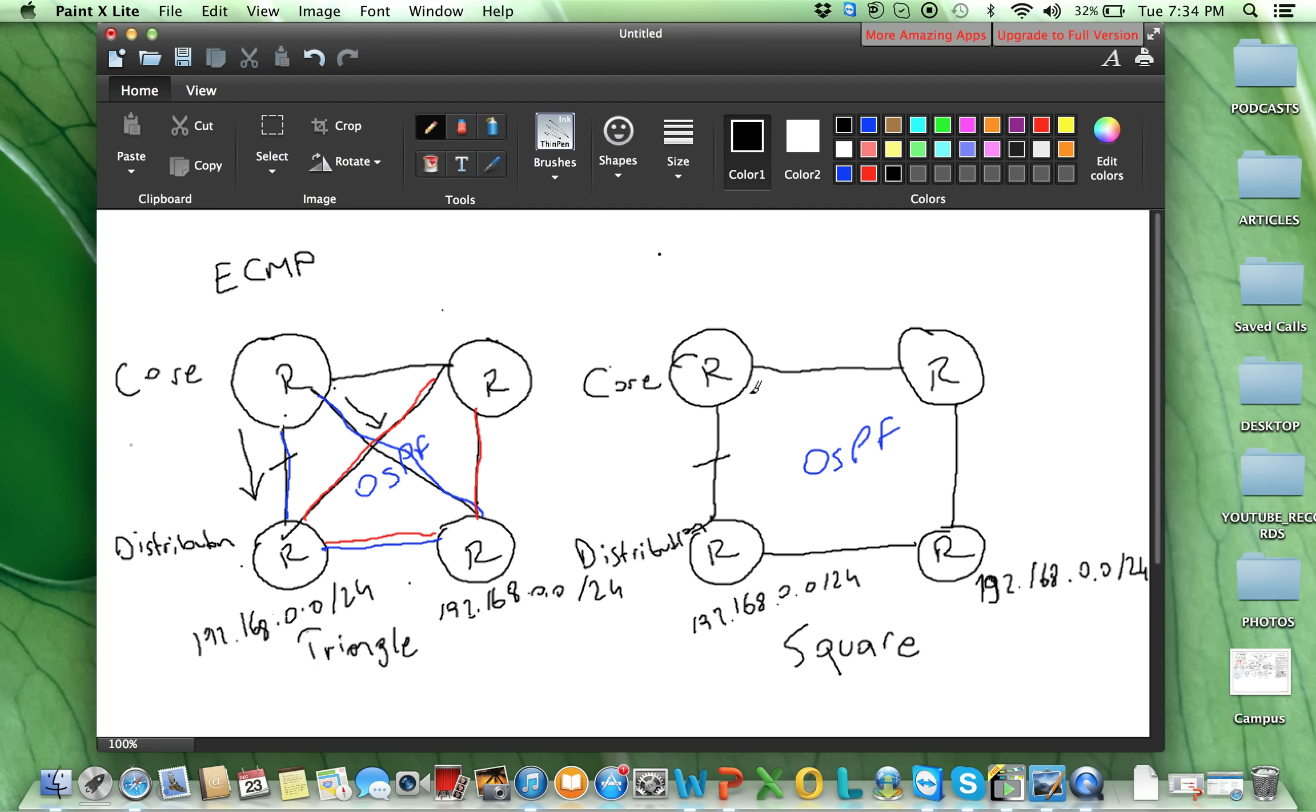But on the right side, we cannot do this since here, let's say, OSPF costs 10, 10, 10. Here for the 192.168.0.0/24, costs will be 10. But through this path will be 20, so I will not choose this one. If this link fails on the right topology, I will of course forward the traffic through this link, but after the OSPF convergence event.